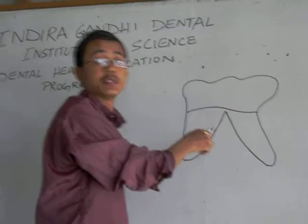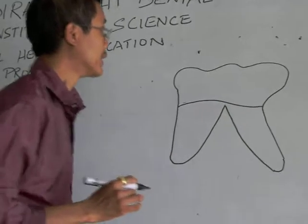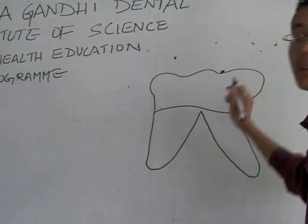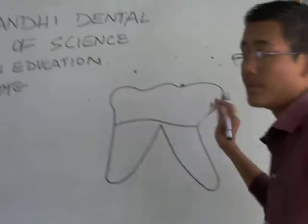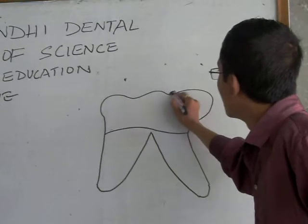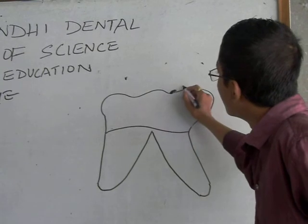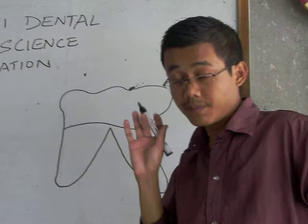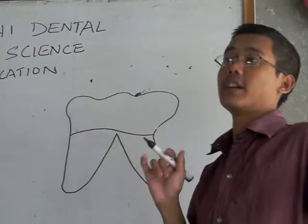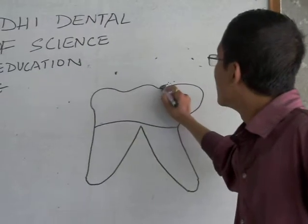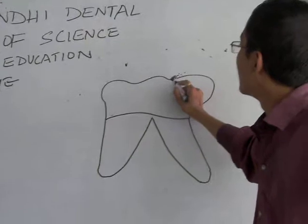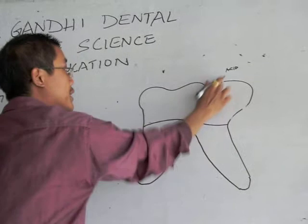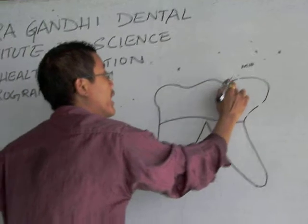This is a tooth — a diagrammatic tooth. What happens during dental caries? First, there will be deposition of food debris. The food debris, mainly sticky carbohydrates, will be deposited. Certain types of bacteria, known as acidogenic bacteria, will ferment this food particle and form acid.